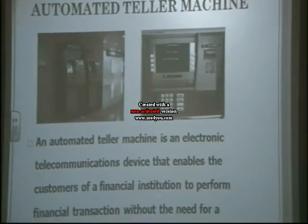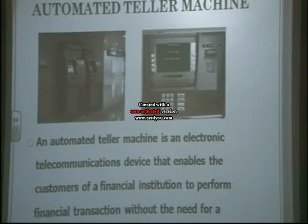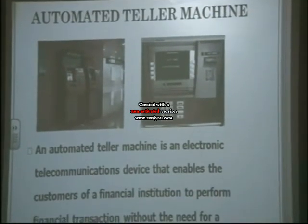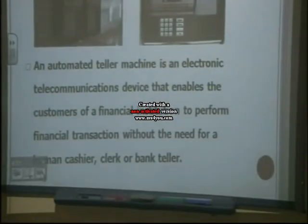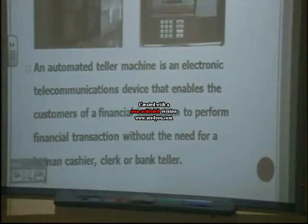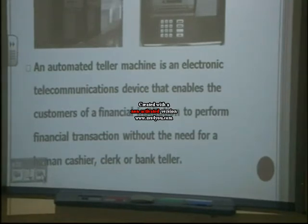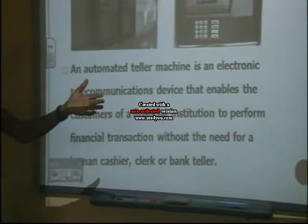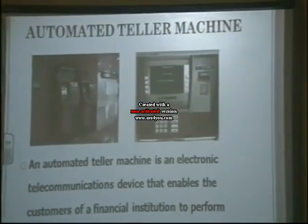The next gadget is the Automated Teller Machine. An Automated Teller Machine is an electronic telecommunications device that enables the customers of a financial institution to perform financial transactions without the need for a human cashier or bank teller. Before now, when you entered the bank, you had to first go to the cashier. But today, especially when you want to make withdrawals, you can just approach the ATM machine, which can be placed outside or inside the banking hall.